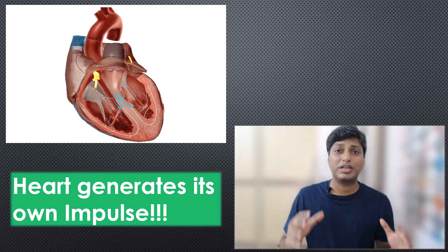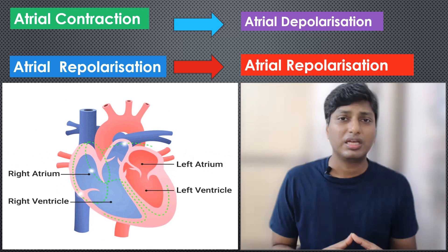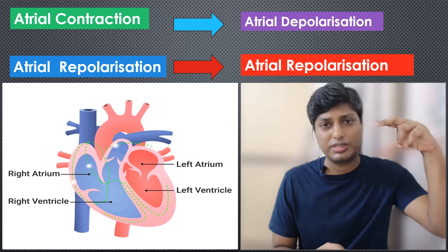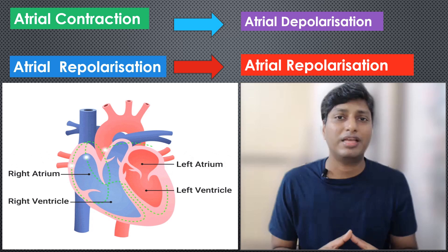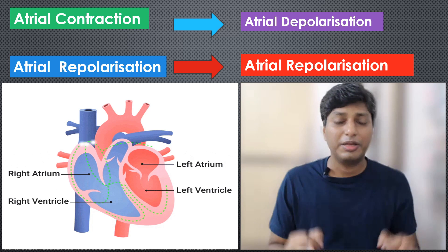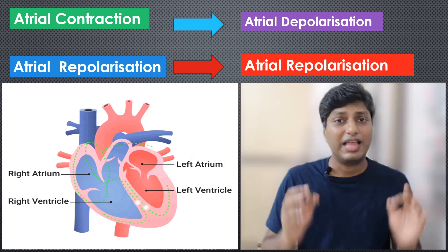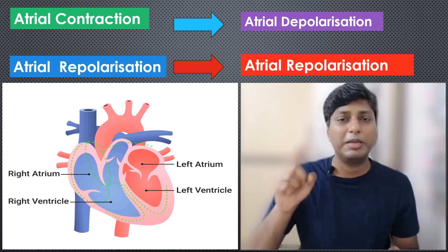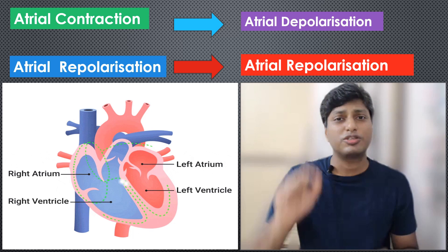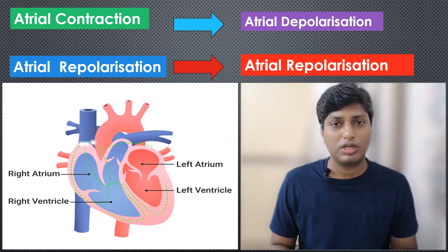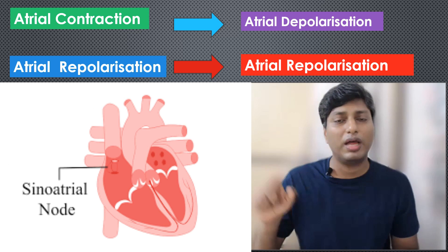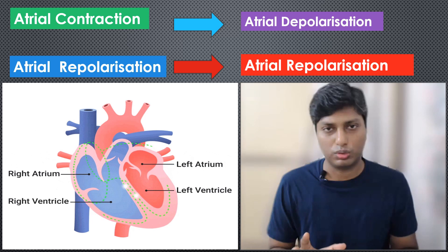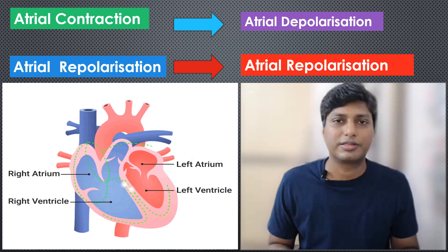Coming back to the topic — the heart generates its own impulse, and this impulse helps the heart to continuously contract and relax. The heart has four basic chambers: the upper two are called the two atria and the lower two are called the two ventricles. The impulse is created inside the right atrium. There is a small muscle inside the right atrium known as the SA node — the sinoatrial node — which generates the impulse. That impulse travels through the atria and then reaches the ventricles.